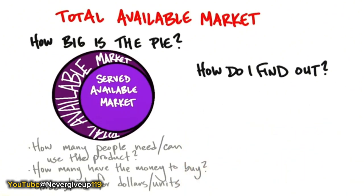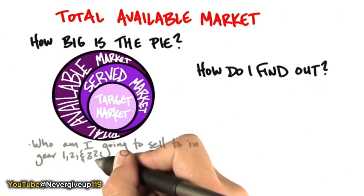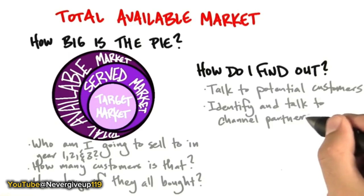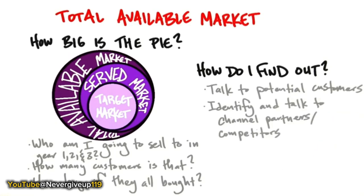Now you want to get specific: who exactly are you going to sell to in years one, two, and three? How many customers is that, and how large is the market if they all bought? This gives you the total number of dollars - your revenue can't exceed this number even at 100% market share. How many units would that be? This is really about getting out of the building and talking to customers, channel partners, and competitors. At the end of this exercise, you have a first-pass hypothesis about whether this business model canvas is worth executing for the next couple of years.